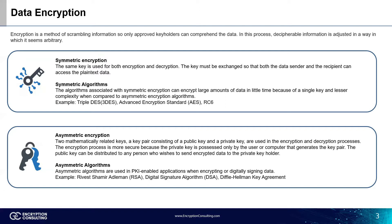The second type of encryption is asymmetric encryption. In this, two separate but mathematically related keys known as the public key and private key are used for encryption and decryption processes. This encryption process is more secure because the private key is possessed only by the user or computer that generates the key pair, whereas the public key can be distributed to any person who wishes to send encrypted data to the private key holder. It's mostly used for digital signing, blockchain, and public key infrastructure.